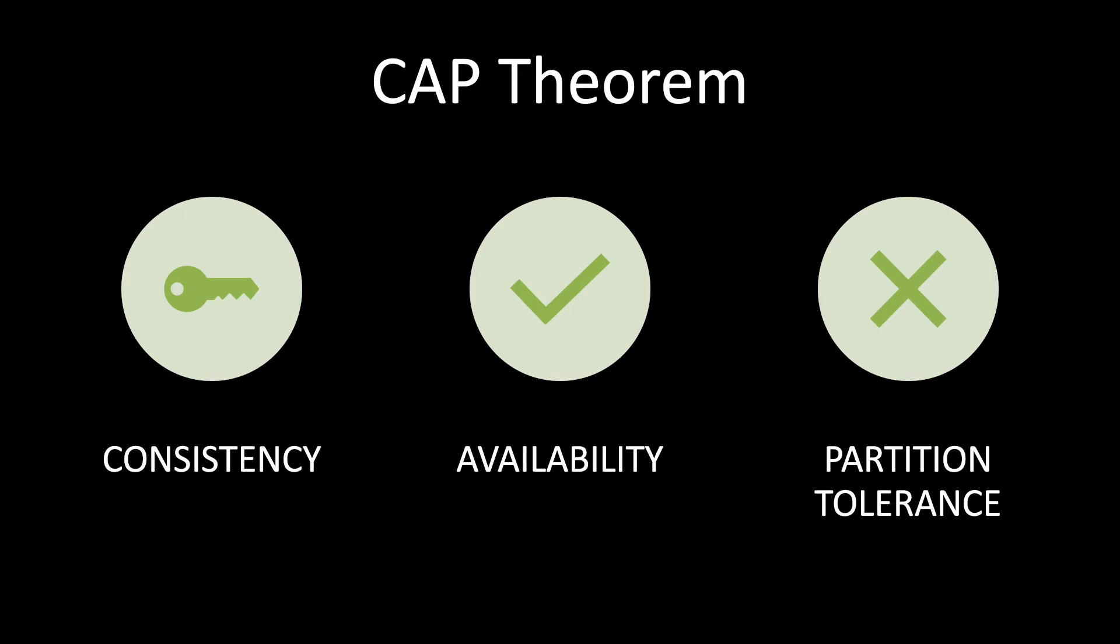So basically, these are the three things: the system doesn't go down which is partition tolerance, availability means the system keeps returning some kind of non-error response, and the system gives you a consistent result always, which is consistency.